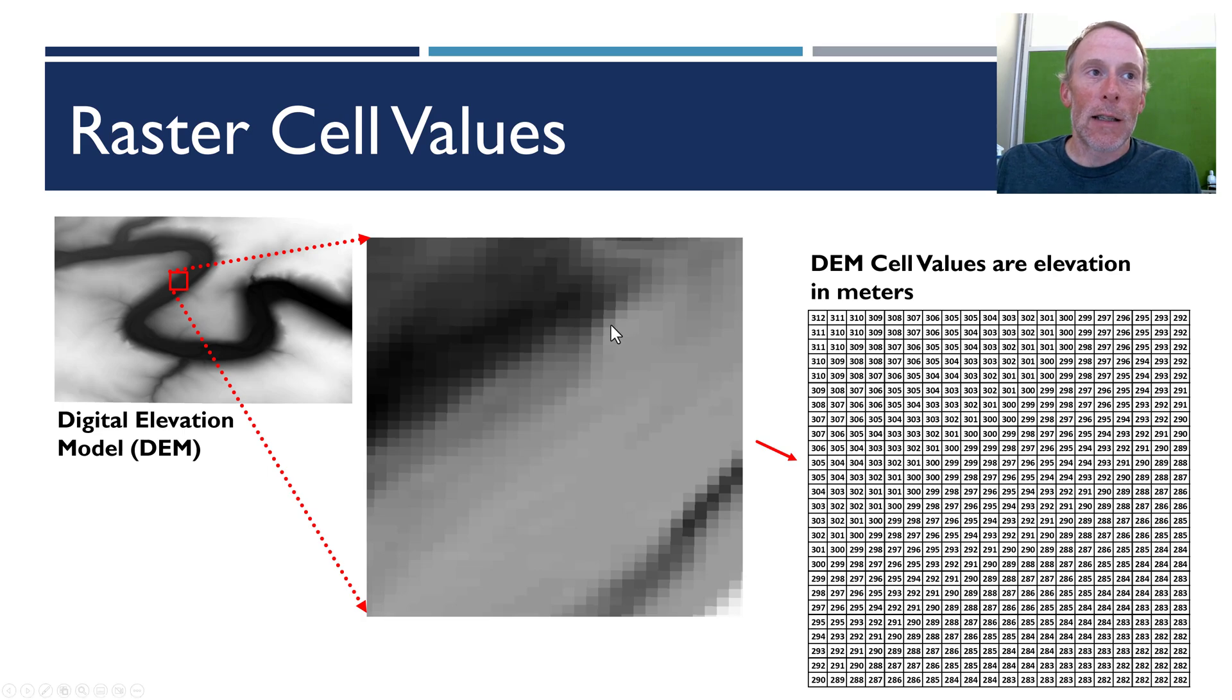Each one of these individual cells is going to have an elevation associated with it and those elevations I actually extracted them, there are tools in GIS to do this, so I extracted them into a grid to show you that you know somewhere over in this part which corresponds to this part is a cell that's got an elevation of about 308 meters. Over here on the right side there's some 286, 286, 285, 284. So we see that there's some elevation range across this example.